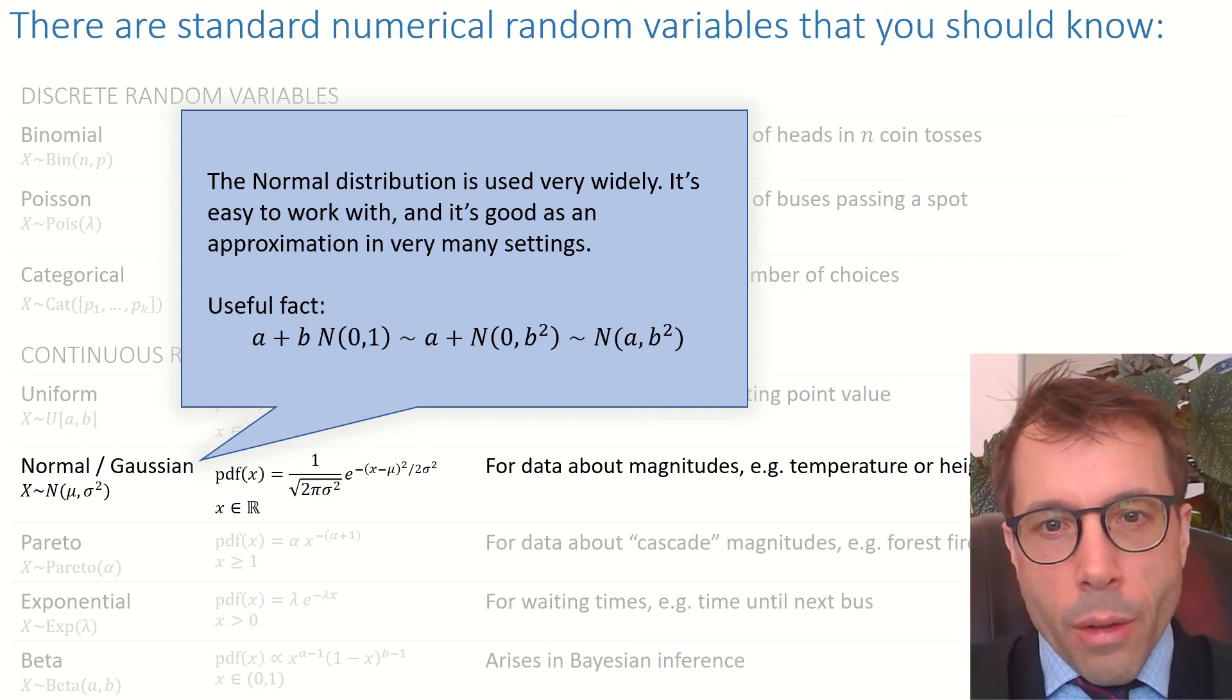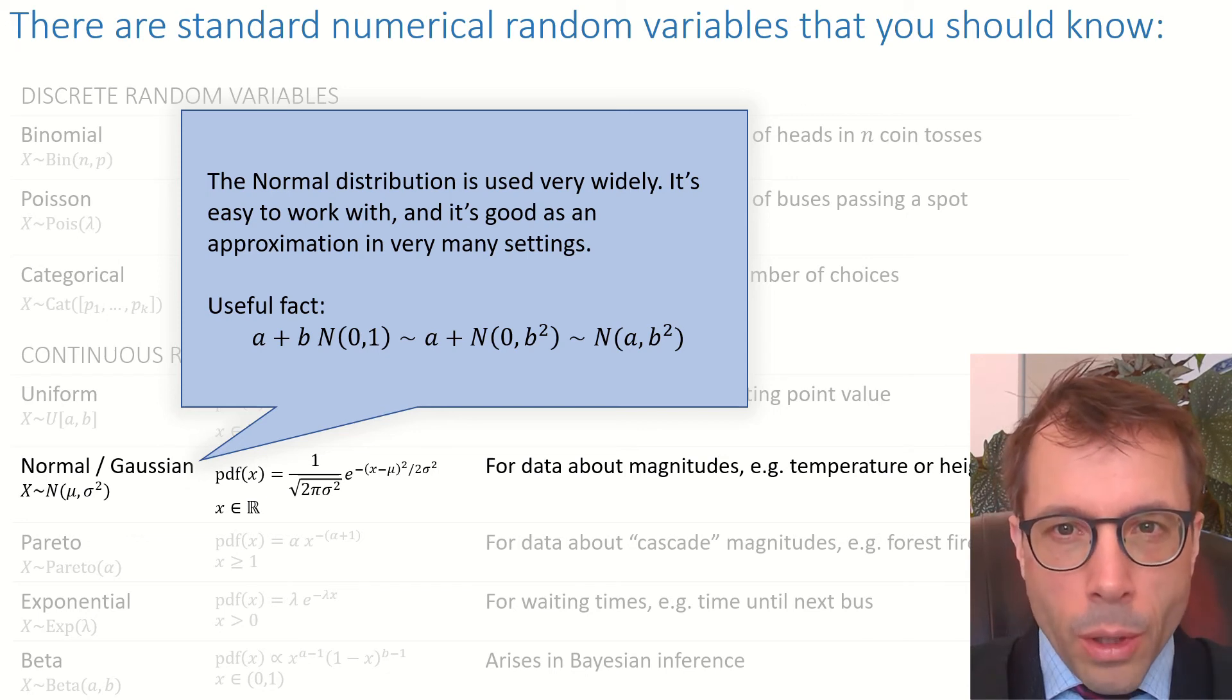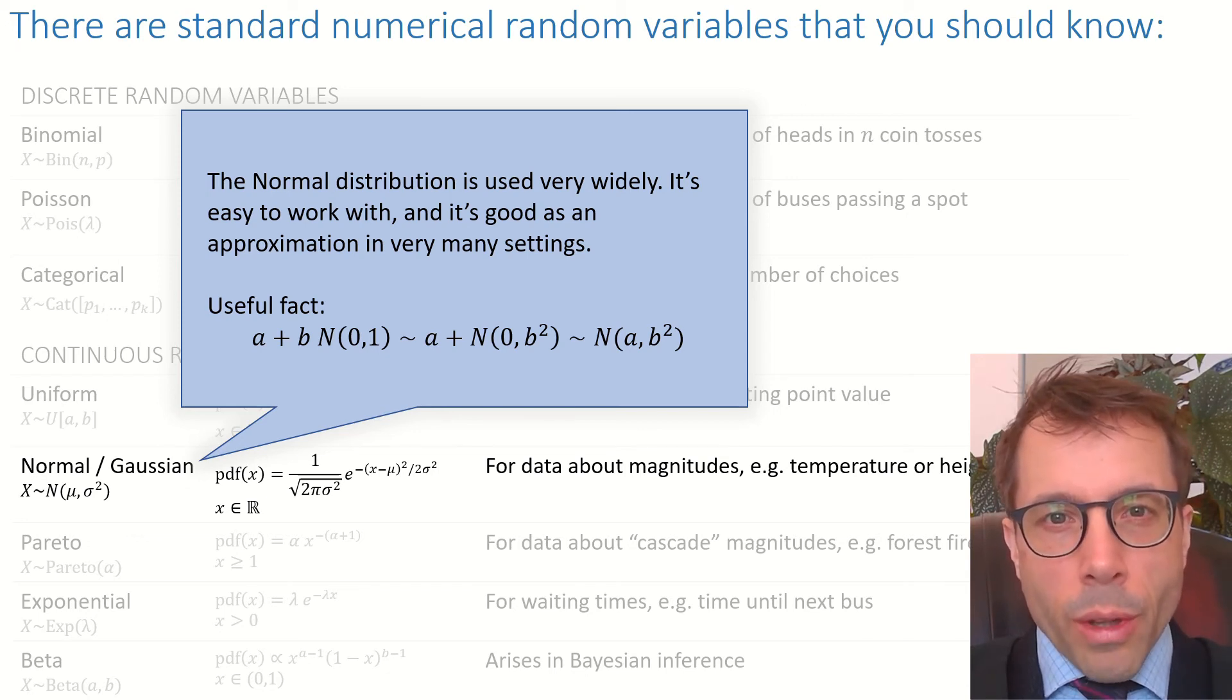This sort of thing just doesn't work for the other random variables. If you took a Binomial and multiplied it by a constant, what you would end up with would not be a Binomial. But it does work for Normal, and that's why Normals are so easy to work with. We'll be using this precise property time and time again in the examples we'll be working through.